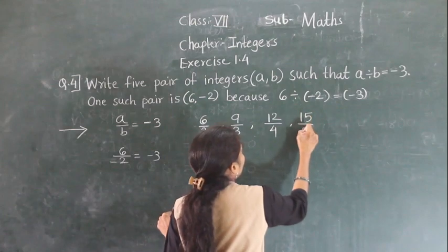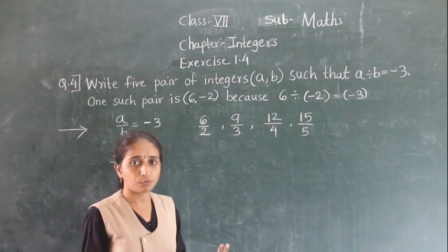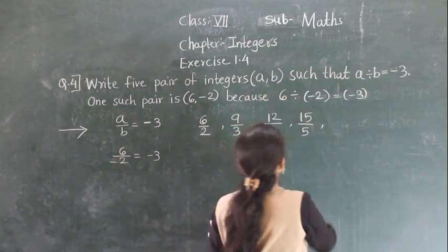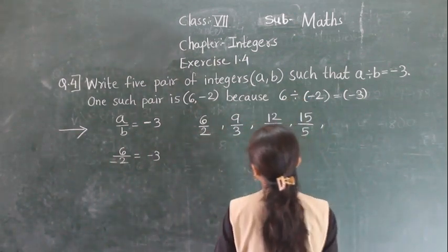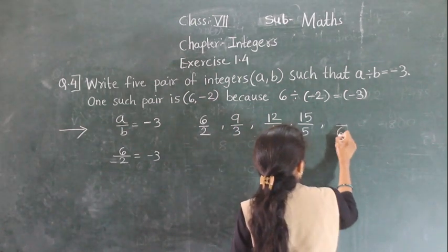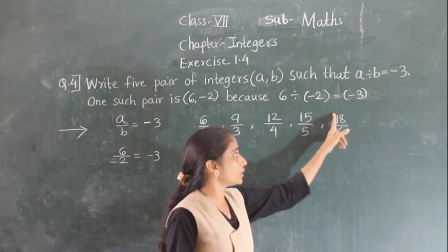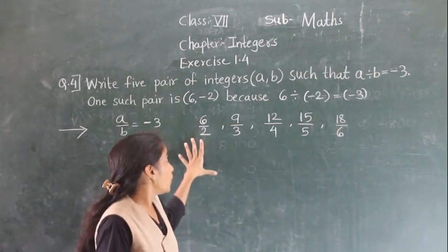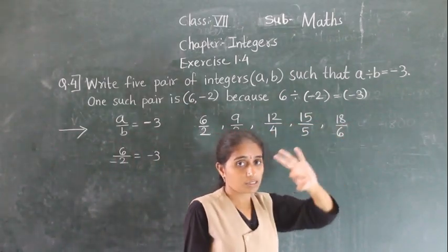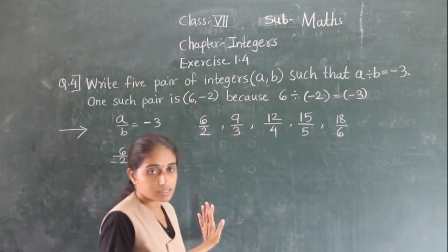Next, 15 upon 5 also gives 3, because 5 threes are 15. So for all these pairs we are getting the answer 3. But we want the answer minus 3.